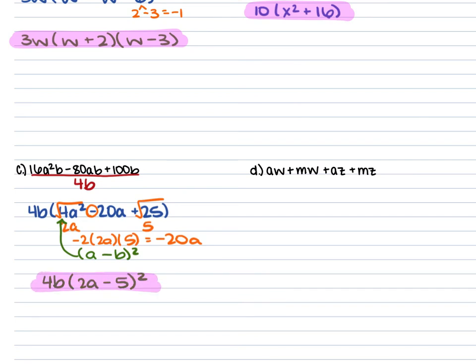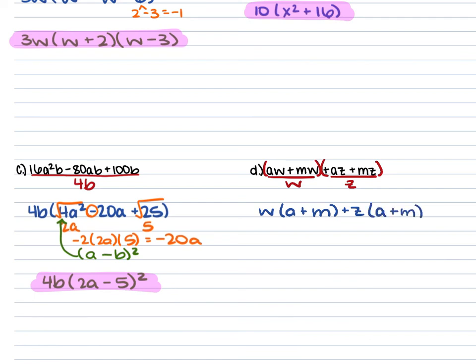For Example 7D, with four terms, we factor by grouping. For aw plus mw, the GCF is w. For az plus mz, the GCF is z. This gives w times a plus m plus z times a plus m. Both parentheses are the same, so the final answer is w plus z times a plus m.